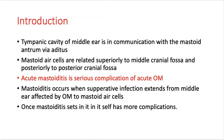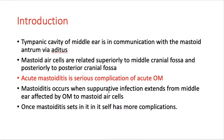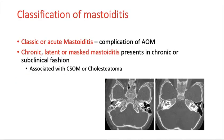Whenever we get otitis media, we can get mastoiditis — inflammation of the mastoid — or collection of pus in the middle ear as well as the mastoid area. Most commonly these are suppurative infections, meaning pus-forming infections, which can extend to the mastoid air cells or damage the middle ear. Mastoiditis can be acute or chronic. Acute or classic mastoiditis is a complication of acute otitis media, and chronic or latent mastoiditis is present in chronic patients.